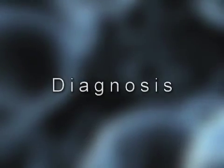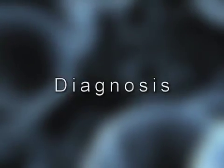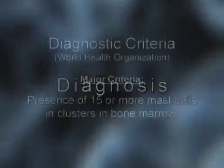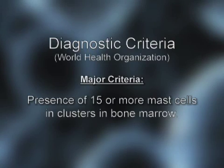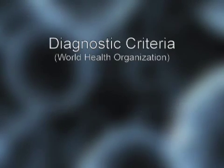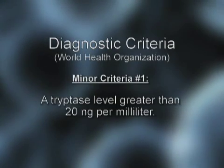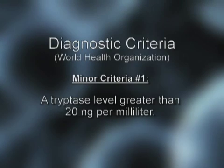The major WHO criterion for diagnosis of mastocytosis is presence of 15 or more mast cells in clusters in bone marrow. In addition to the major criterion, there are four minor criteria.